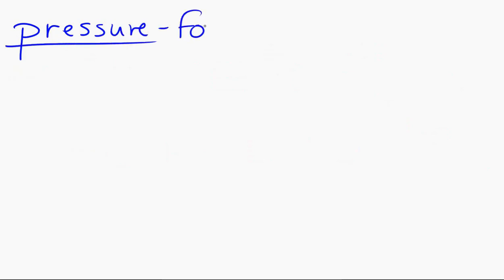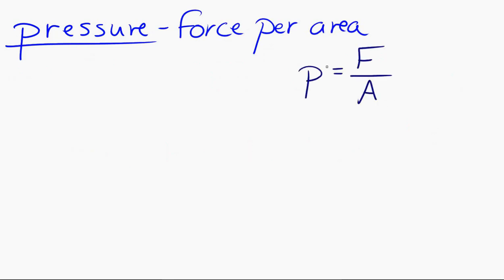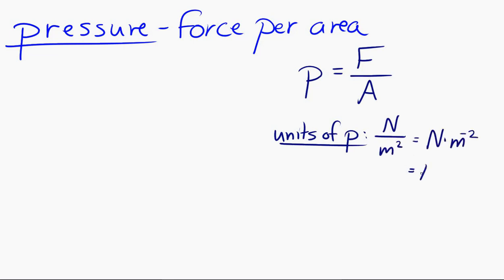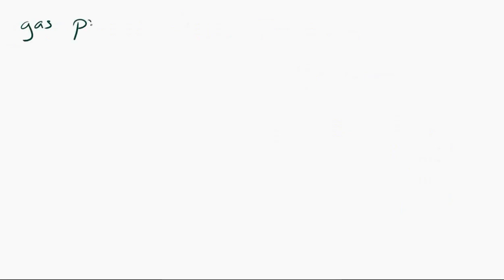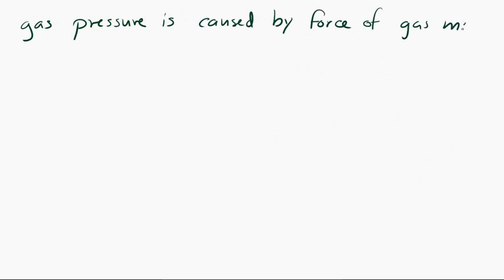Now to go any further with analyzing a gas, we have to talk about pressure. Pressure is defined as the force per area. We can make a nice equation out of that: P, pressure, is equal to F, force, divided by A, area. The units of pressure are the Newton per square meter. And that Newton per square meter is defined as a Pascal, Pa. Now pressure is a pretty big concept. We're going to specifically talk about gas pressure, where the force is the force exerted by the gas molecules when they collide with the side of a container, and the area is the area of that side of the container.